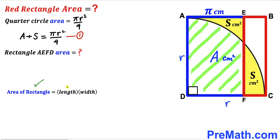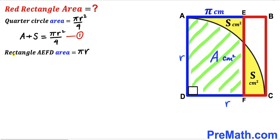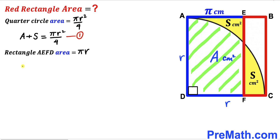Now let's calculate the area of rectangle AEFD. Recalling the area of a rectangle formula: area equals length times width. The length of this rectangle is r and the width is π, so the rectangle AEFD area equals π times r. We can observe that this rectangle area equals the sum of areas s and A, so: A + s = πr. I'll label this as equation number two.